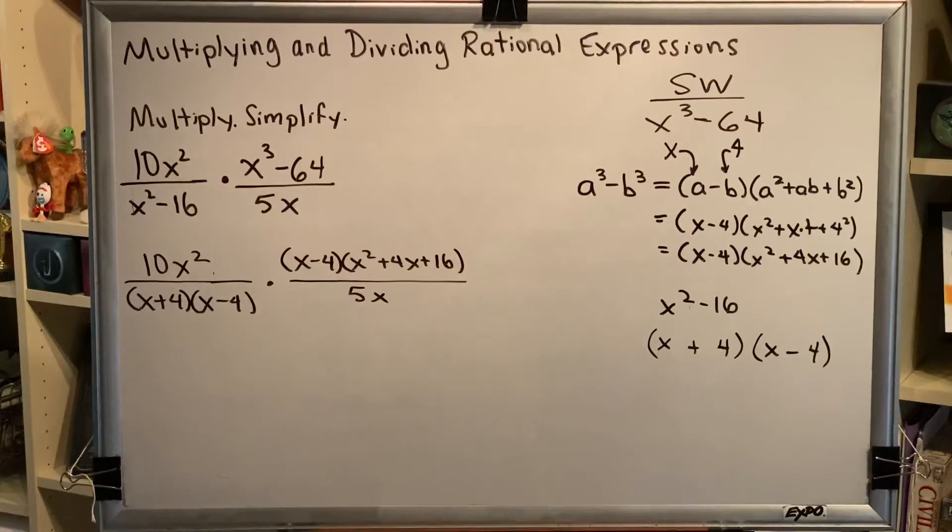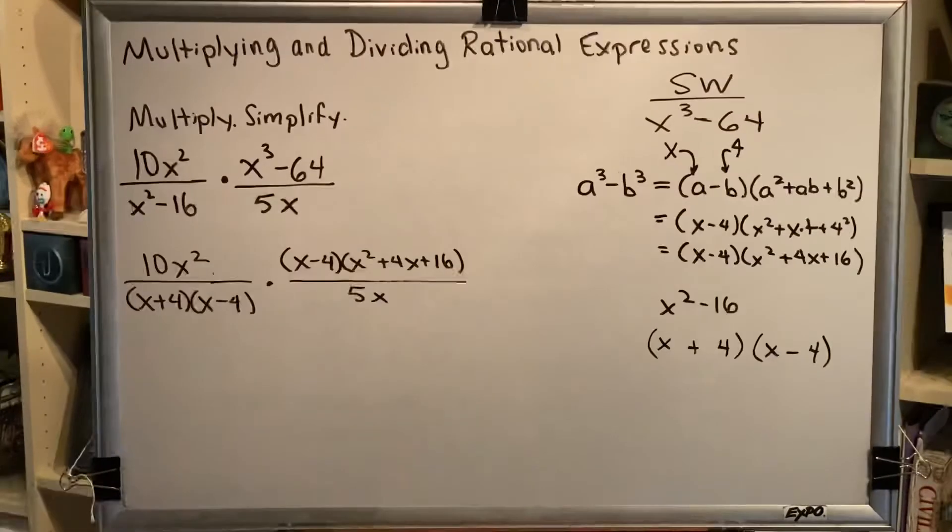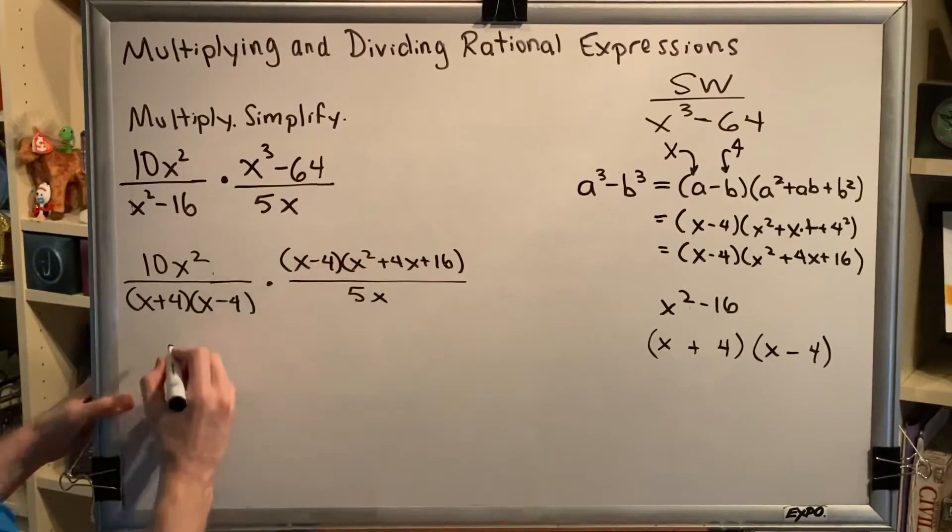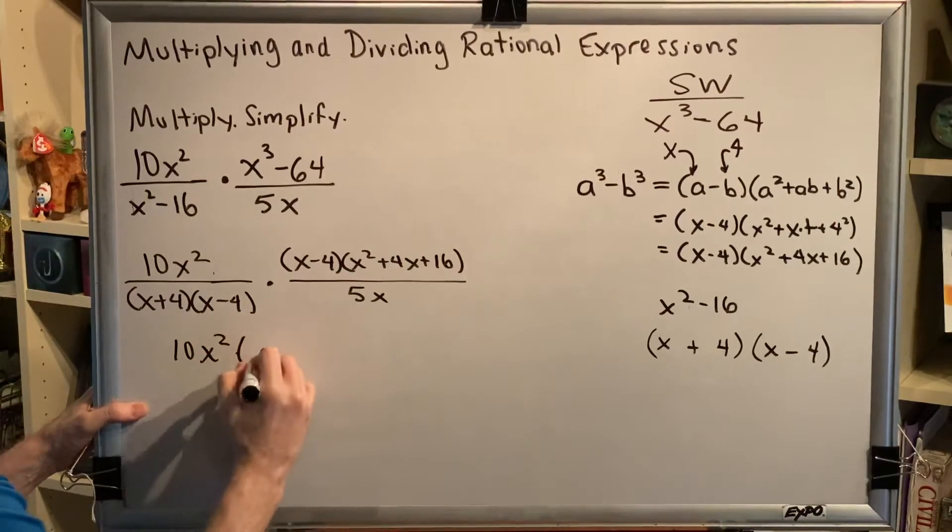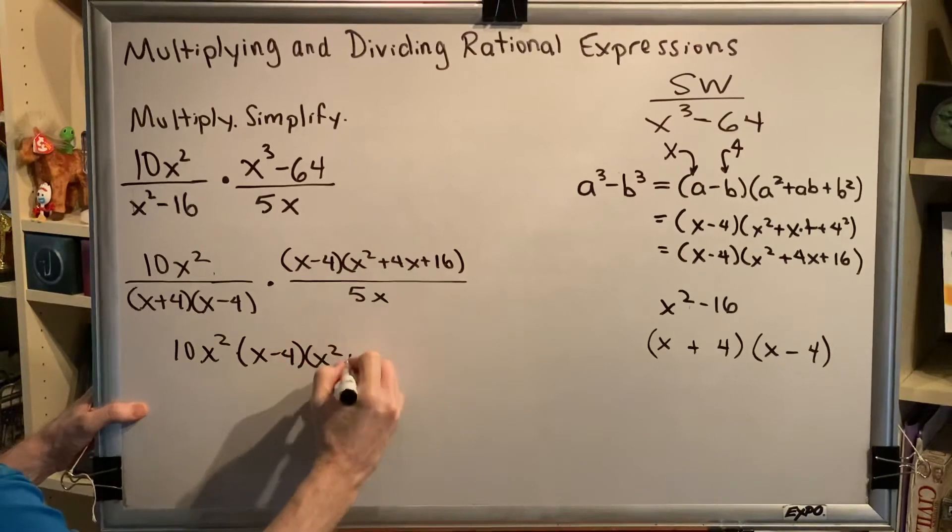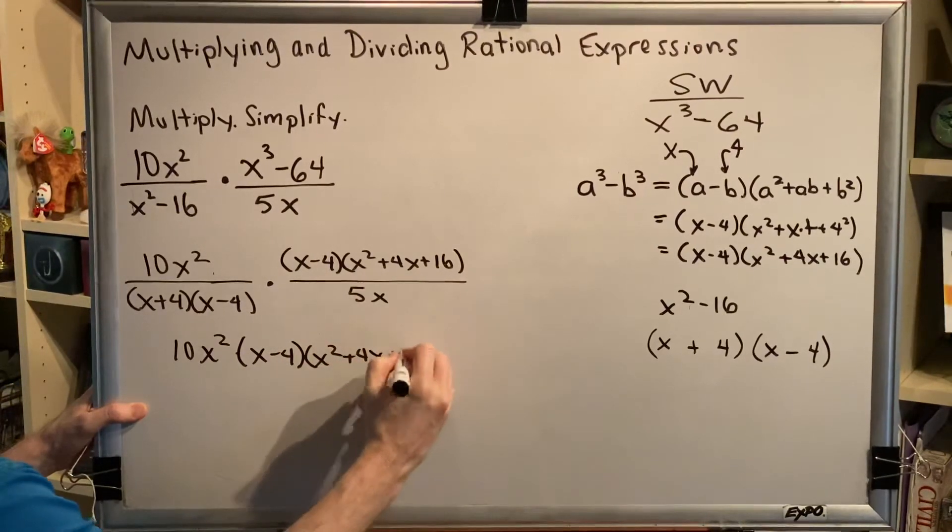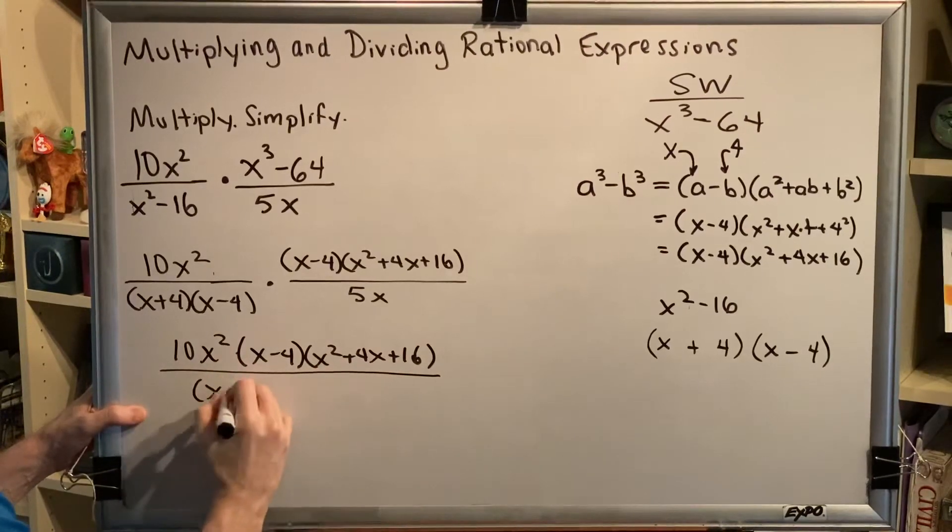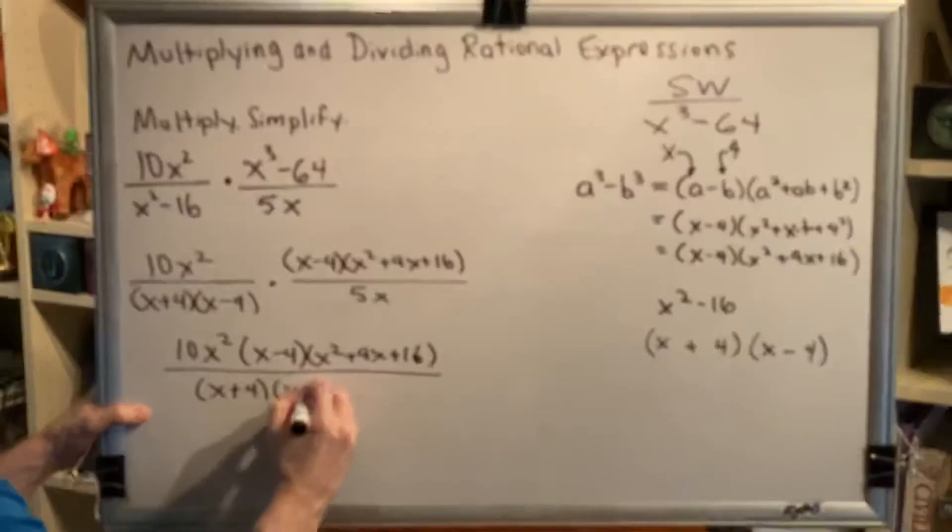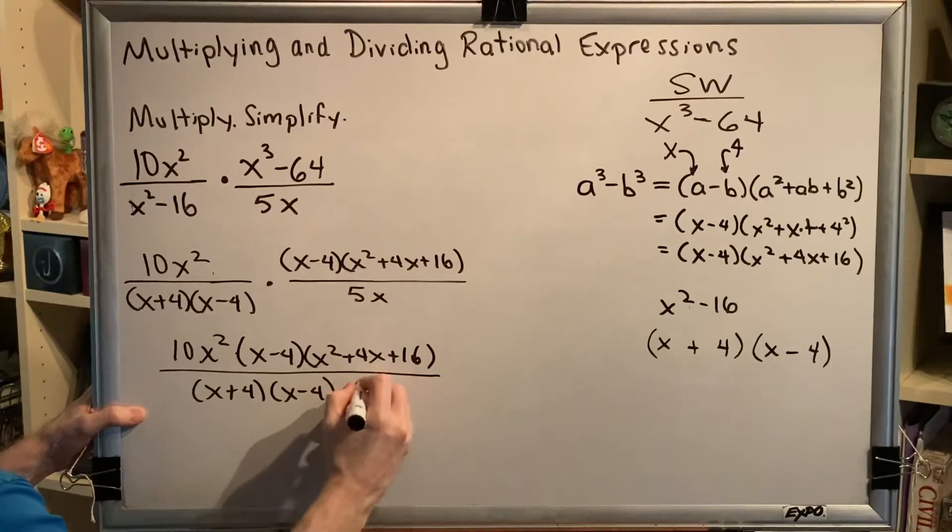The next step is to combine these two fractions into a single fraction. So then we're going to have 10x² times (x-4)(x²+4x+16) over (x+4)(x-4)(5x).